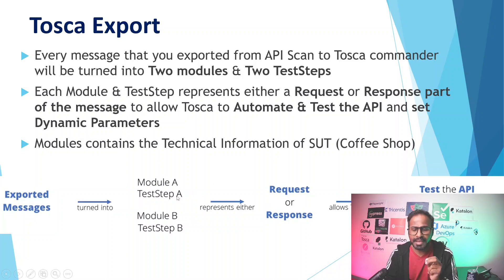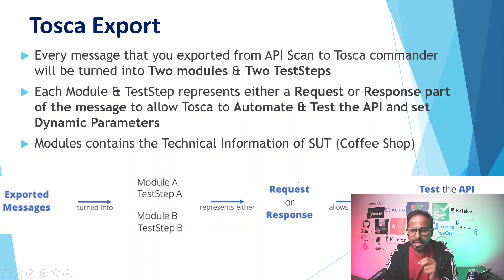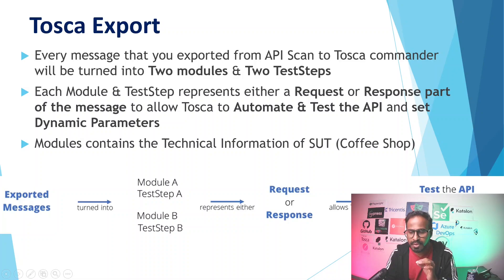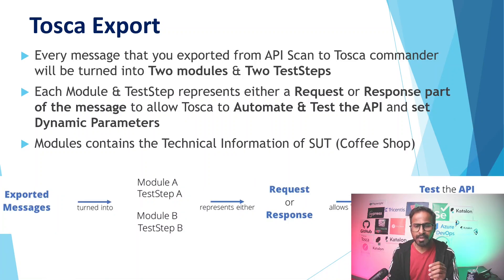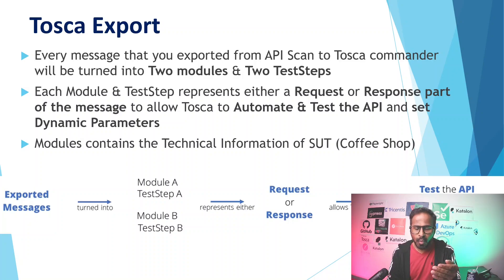In the same way, it creates two test cases — one for request, another for response. This module and test step exported from API scan results allows Tosca to automate your test cases and set dynamic parameters. Now let us go to Tosca and understand what I just discussed.